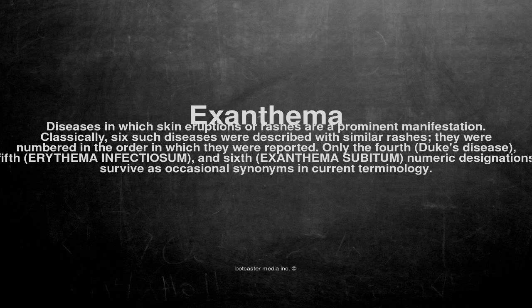Classically, six such diseases were described with similar rashes, and they were numbered in the order in which they were reported. Only the fourth, Duke's disease; fifth, Erythema infectiosum; and sixth, Exanthema subitum — numeric designations survive as occasional synonyms in current terminology.